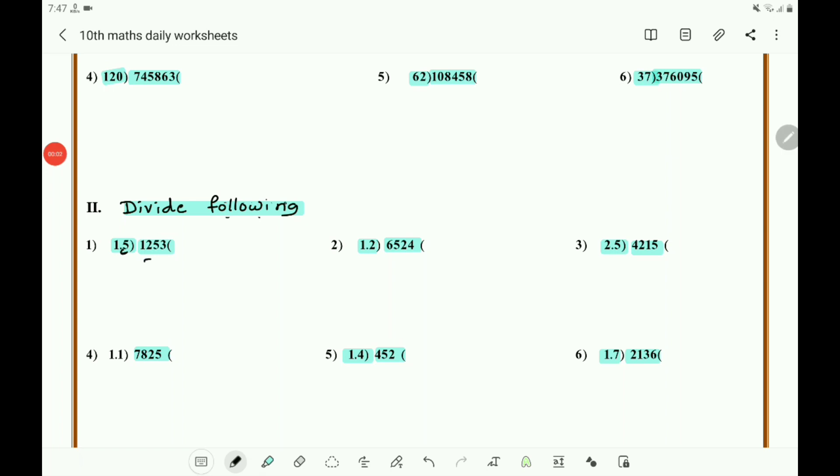Now let us take one example: 1253 divided by 1.5. Remove the decimal point, make it 15, and take 0 here. Now 15 into 120. You can take here - 1 is smaller, 12 is also smaller, so you must take 125. 125 means you take 120, that is 15 times 8 is 120. What is remaining here? 5.